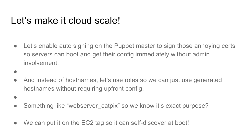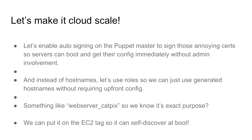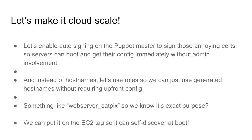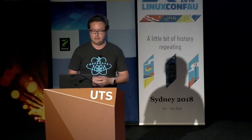So we started doing Puppet environments that need to be cloud scale using auto signing. This is quite common in any Puppet environment on Amazon — instead of having an admin sign certificates, the server comes online, registers with the master, gets the certificate signed automatically, and grabs some config. People also tend to drop hostnames and start using roles — for example, not 'host one, host two' but 'web server cat-pics' — and it gets the configuration tied to that role.